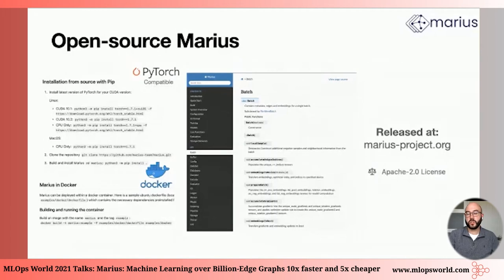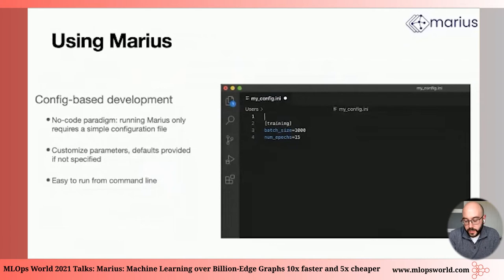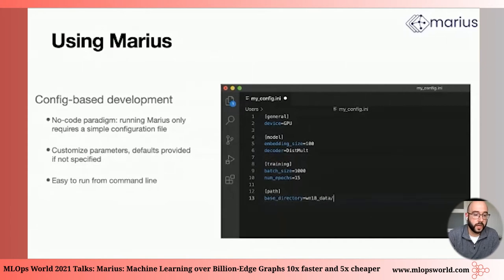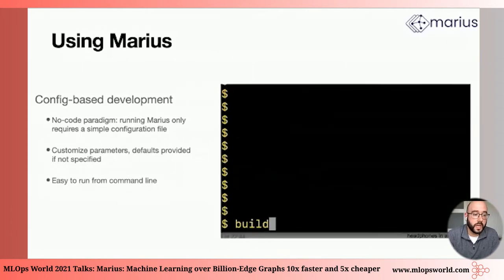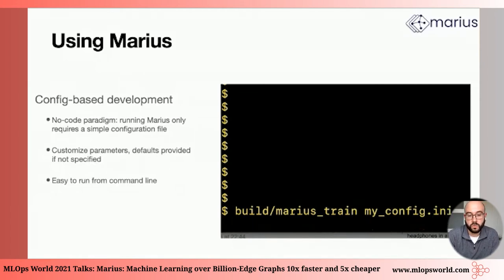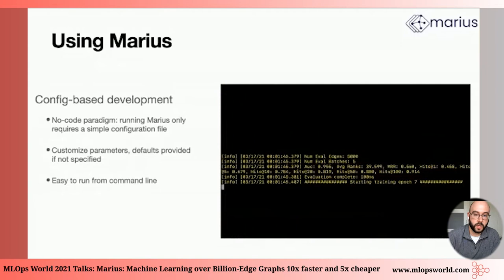So what does it look like to use Marius? When designing Marius, we had a couple of key principles in mind. The first one being ease of use, and that's why we opted for a no-code paradigm. Marius only requires users to describe a config file. As you can see in the demonstration, you only need to define your device, the type of model you want, the size, and the directory where your data lives. You can customize all these different parameters, and we offer a lot of defaults through built-in optimization methods. You can execute training via a simple command line, which allows you to obtain embeddings for your data.